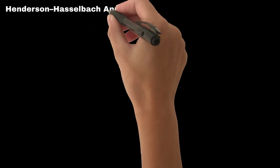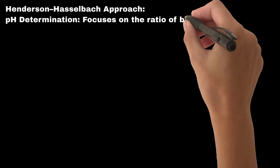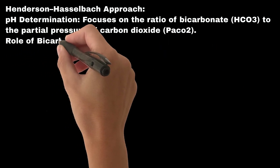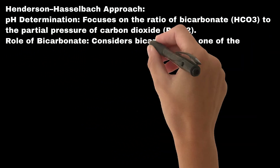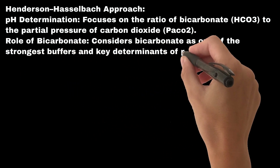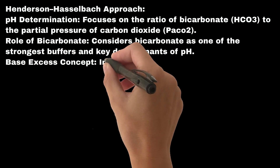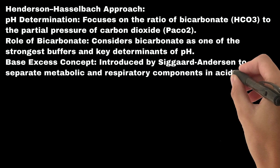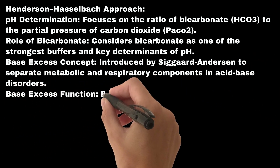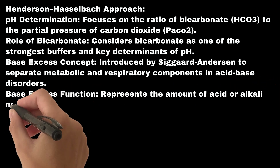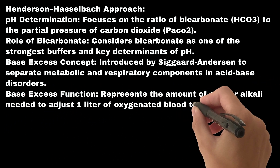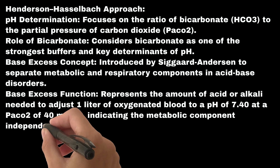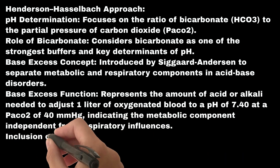Henderson-Hasselbalch approach: pH determination focuses on the ratio of bicarbonate (HCO3) to the partial pressure of carbon dioxide (PCO2). Bicarbonate is considered one of the strongest buffers and key determinants of pH. The base excess concept, introduced by Sigurd Anderson, separates metabolic and respiratory components, representing the amount of acid or alkali needed to adjust 1 liter of oxygenated blood to a pH of 7.40 at a PCO2 of 40 mmHg, indicating the metabolic component independent from respiratory influences.